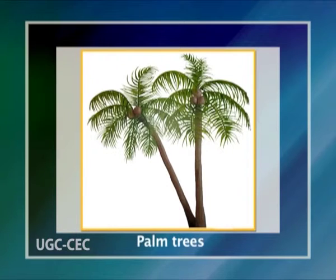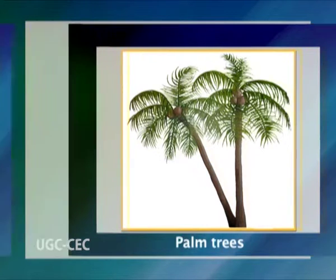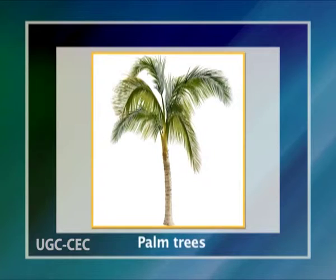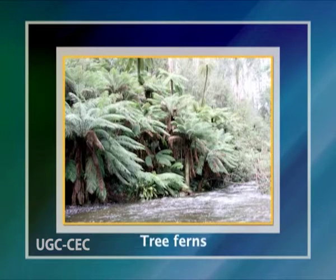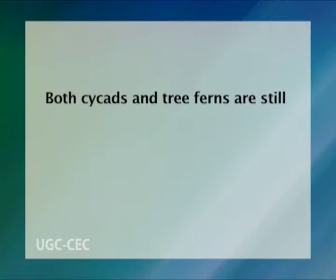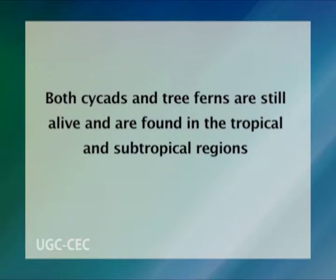The distinctive tree form of flowering palm trees, characterized by a single apical growing point and pith rather than wood in the stem, is outwardly similar to that of the completely unrelated cycads, which are of Jurassic origin, and of the even older tree ferns, which first developed this form in the Paleozoic in a variety of ways. Both cycads and tree ferns are still alive and are found in the tropical and subtropical regions of the world.